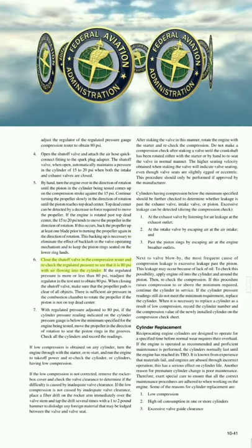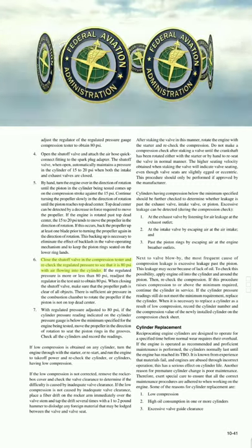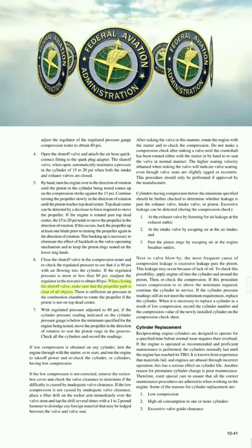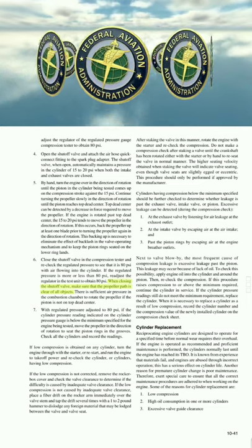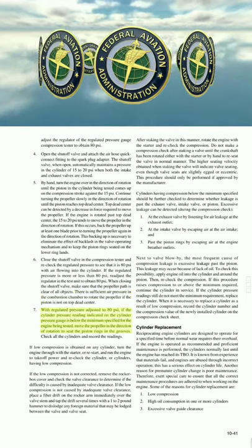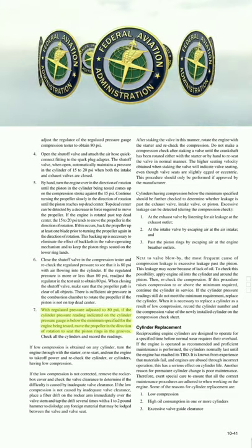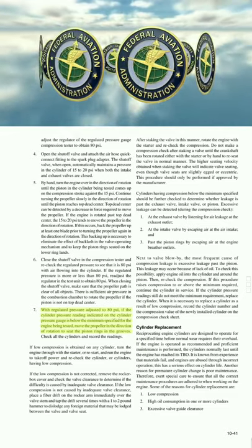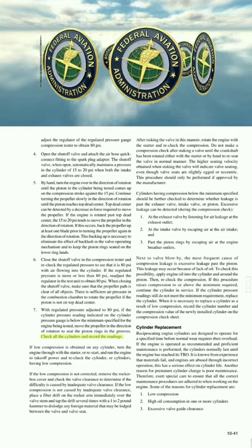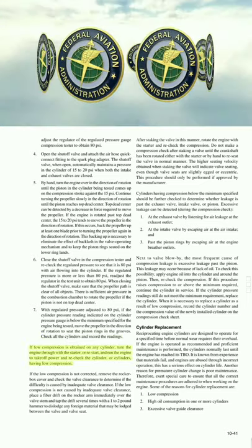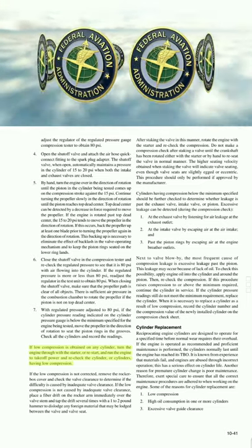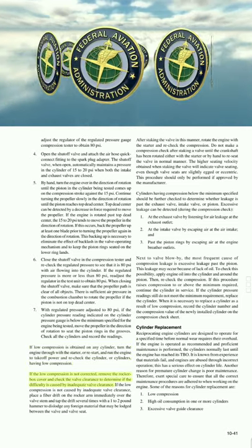Close the shutoff valve and recheck regulated pressure to ensure it is 80 psi. When closing the shutoff valve, ensure the propeller path is clear — there is sufficient air pressure in the combustion chamber to rotate the propeller if the piston is not on top dead center. With regulated pressure at 80 psi, if cylinder pressure is below the minimum specified, move the propeller in the direction of rotation to seat the piston rings. Check all cylinders and record readings. If low compression is obtained on any cylinder, run the engine to takeoff power and recheck.